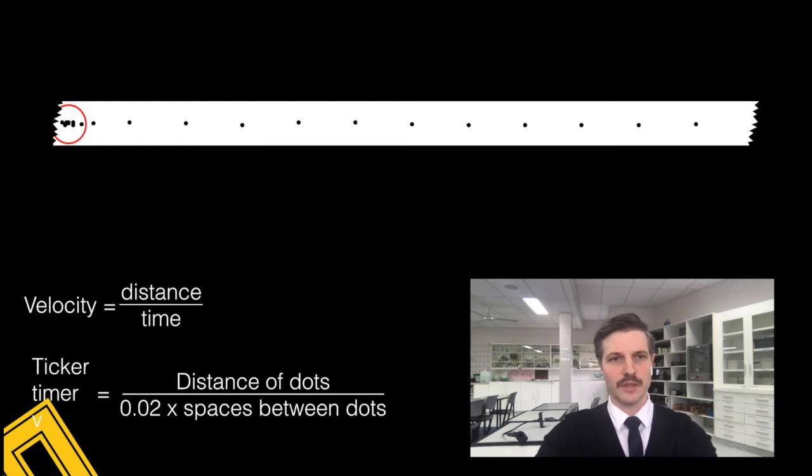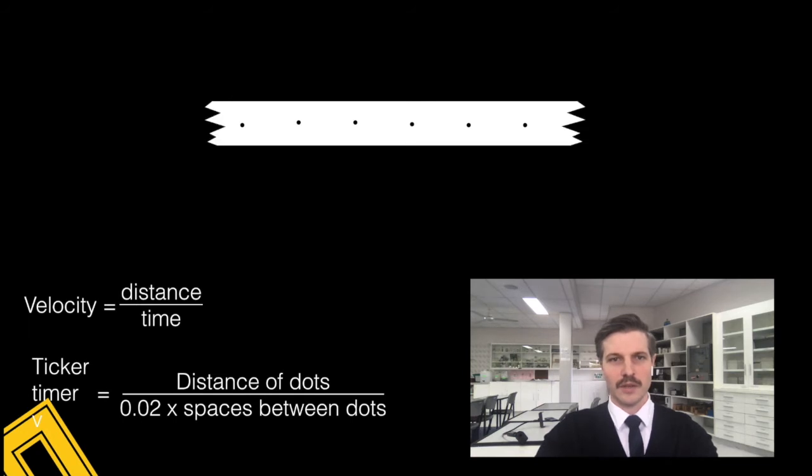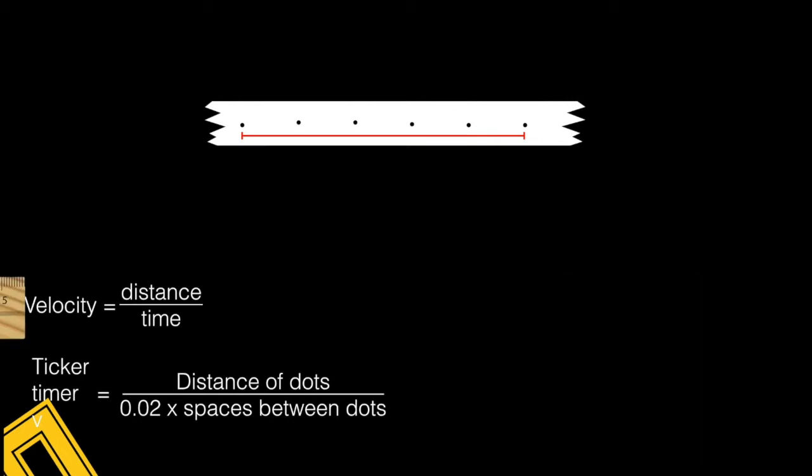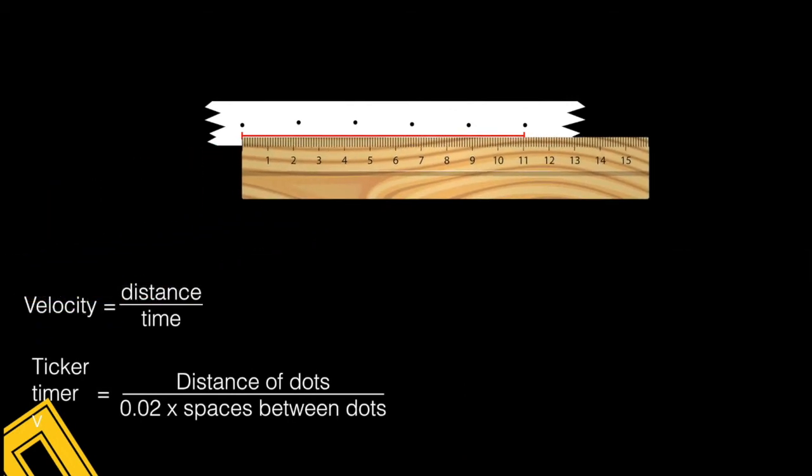For instance, obviously we're going to scrap that crappy little bit at the start which we don't want, and we're going to find a nice good section here. So I can see I've got 1, 2, 3, 4, 5 intervals there. Now if I get my ruler here I can measure it out and I'll get a distance of 11 centimeters, 0.11 meters.